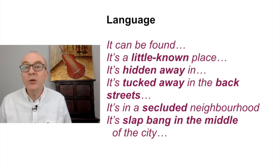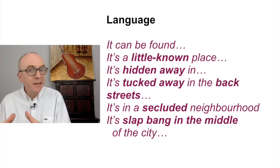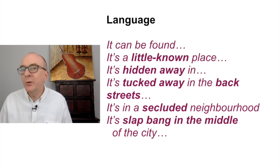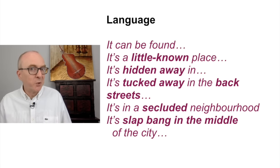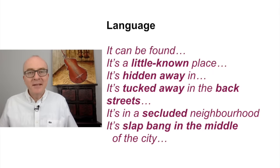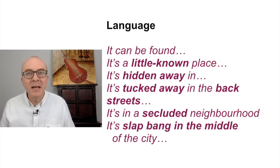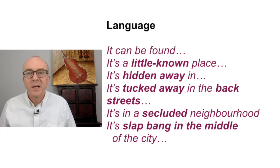Maybe you say 'it's in a secluded neighbourhood.' Secluded means isolated, not a lot of people, fairly quiet — a secluded area, a secluded neighbourhood. 'My dad, who lives in Manchester, which can be found in the north of England, he lives in a secluded neighbourhood — it's hidden away in the back streets of this town.' Finally, if it's in the middle of the city, why not say 'it's slap bang in the middle of the city'? Slap bang — right in the middle. Again, unusual vocabulary, but really good to get your band seven. So there is some language talking about where it is.